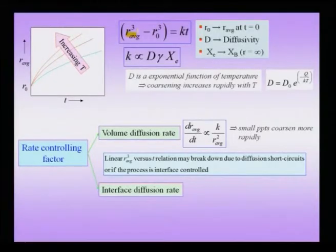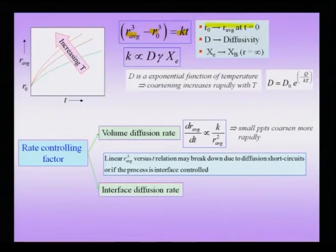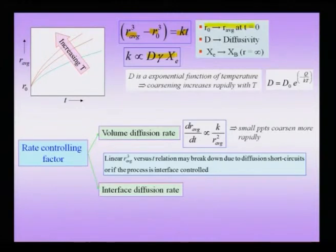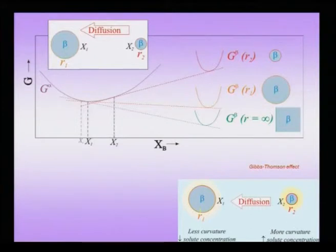The size of the precipitates increases with time — specifically the average size — and the function by which it increases is: r̄³ − r₀³ = k·t. The cube of the average size is related to time, where r₀ is the average radius at t = 0. The constant k is directly proportional to the product of diffusivity, interface energy, and the equilibrium concentration xc adjacent to the precipitate, which can be read from the common tangent construction.